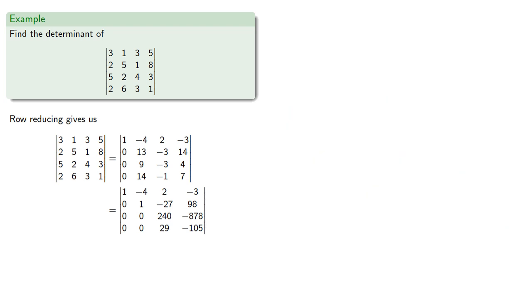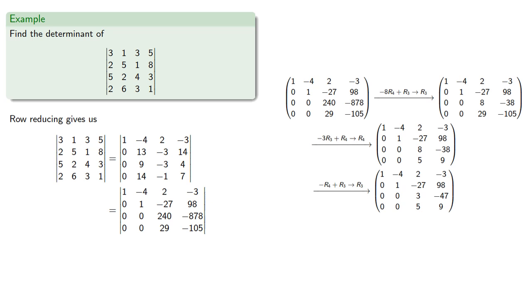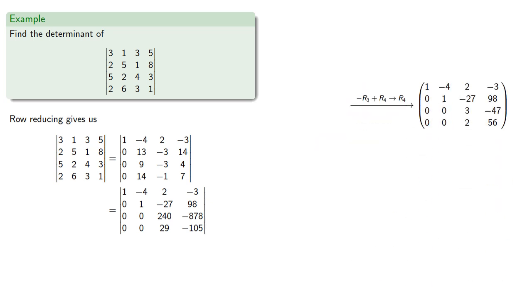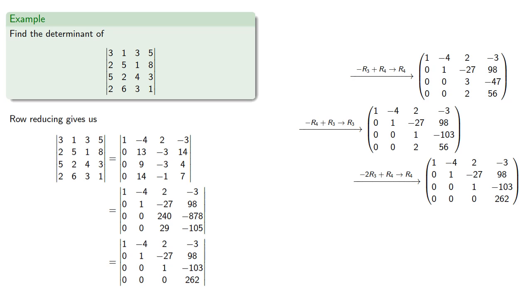Now we subtract 8 times the fourth row from the third, then 3 times the third row from the fourth, then the fourth row from the third, the third from the fourth, and the fourth from the third again — giving a leading entry of 1, which we use to clear out the remaining entries. We now have our triangular matrix, and the determinant is the product of the entries along the main diagonal.